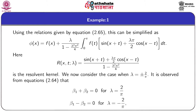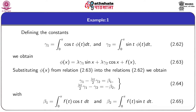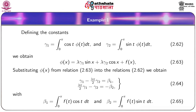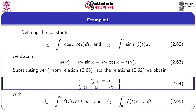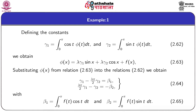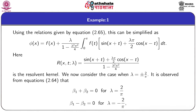Next, we consider the case when λ equals ±2/π. From equation 2.64, if we substitute λ = 2/π, then 2.64 becomes γ1 − γ2 = β1 and γ1 − γ2 = −β2. So for λ = 2/π we get β1 + β2 = 0. Similarly, substituting λ = −2/π in equation 2.64, we observe that β1 − β2 = 0 for λ = −2/π.